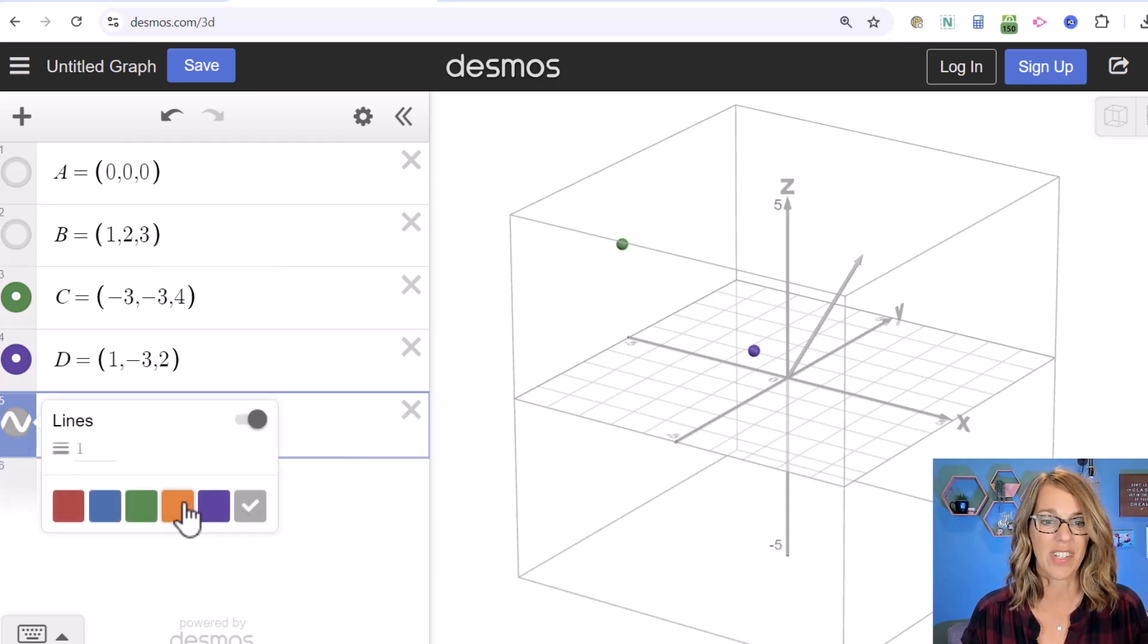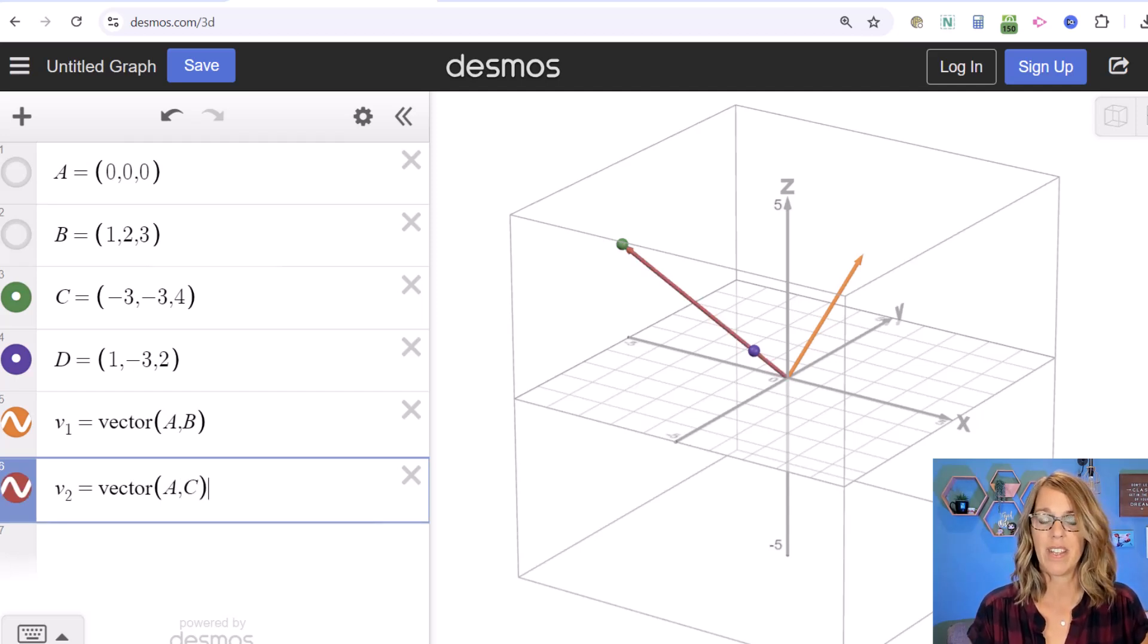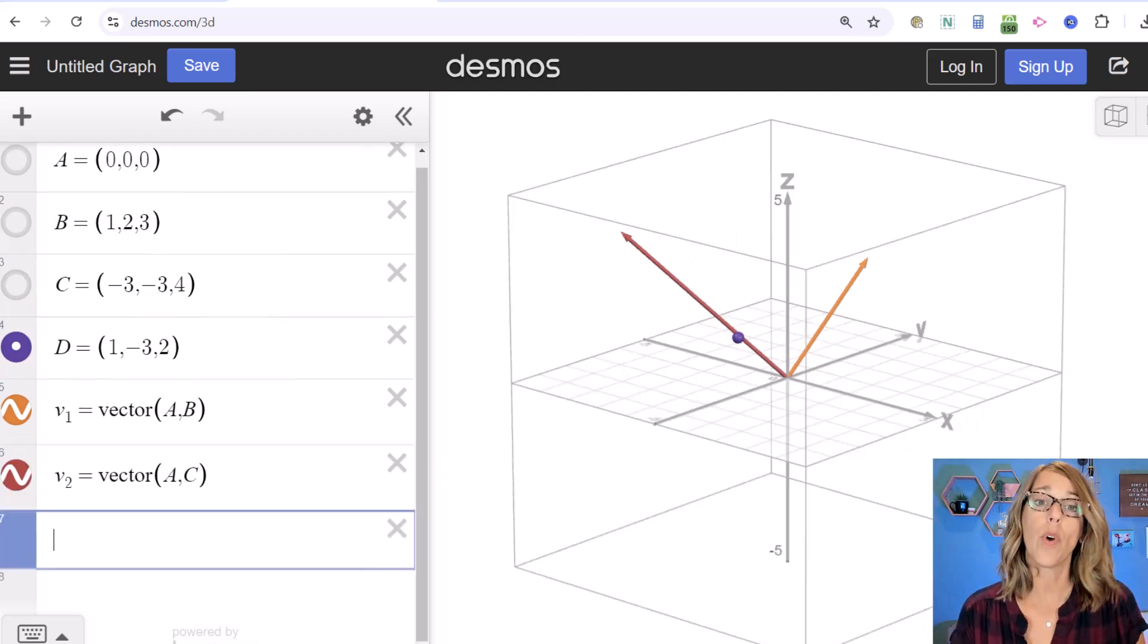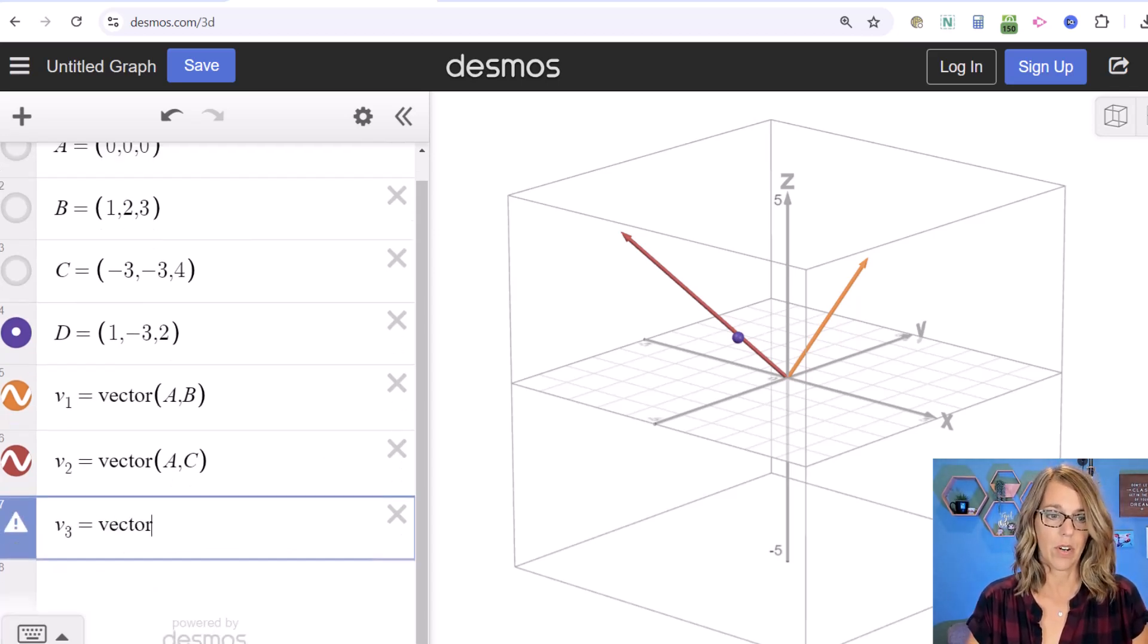Using the same approach, v₂ equals vector(initial point, terminal point). I'll remove those points. Then v₃ equals vector(initial point, terminal point), and I'll get rid of point D.